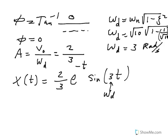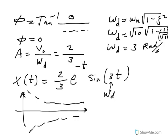The phase angle is 0, so the sine term is simply sin(3t), where 3 is ωd. This underdamped system starts at position zero, follows a decaying envelope, oscillates, and eventually approaches zero. Thank you for listening.